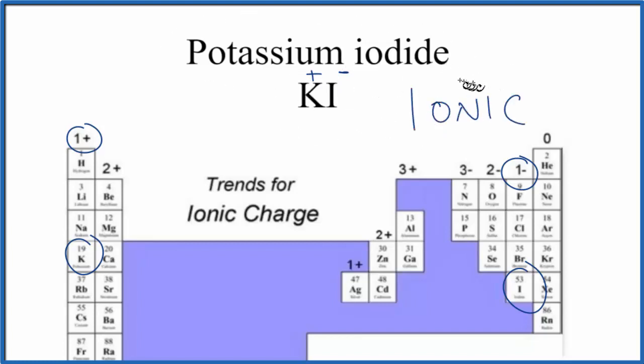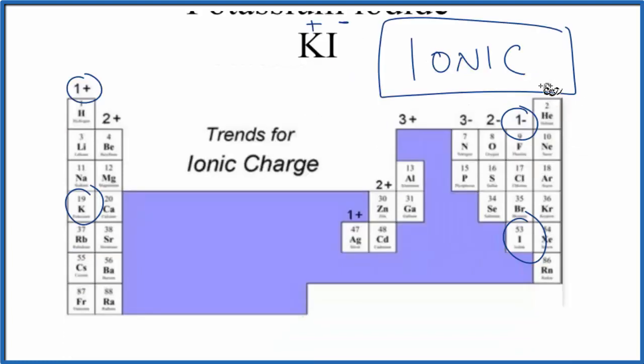This is Dr. B answering the question whether potassium iodide, KI, forms ionic or covalent bonds. It forms ionic bonds. Thanks for watching.